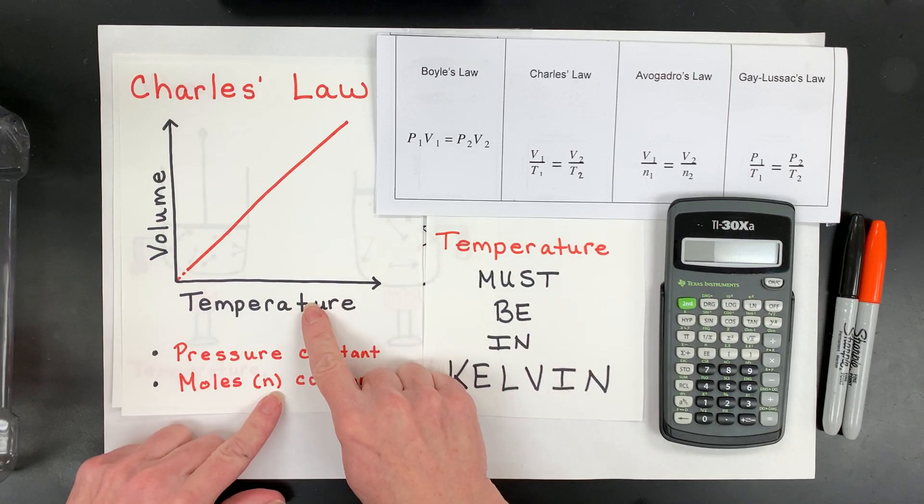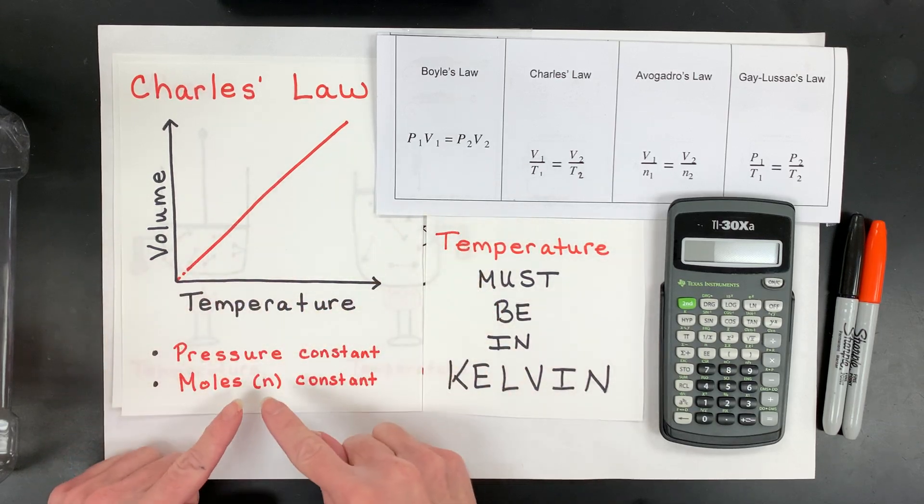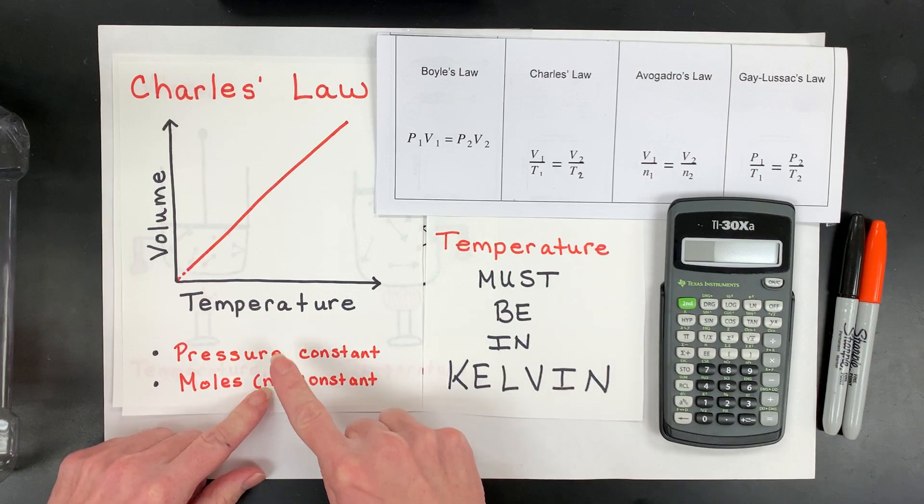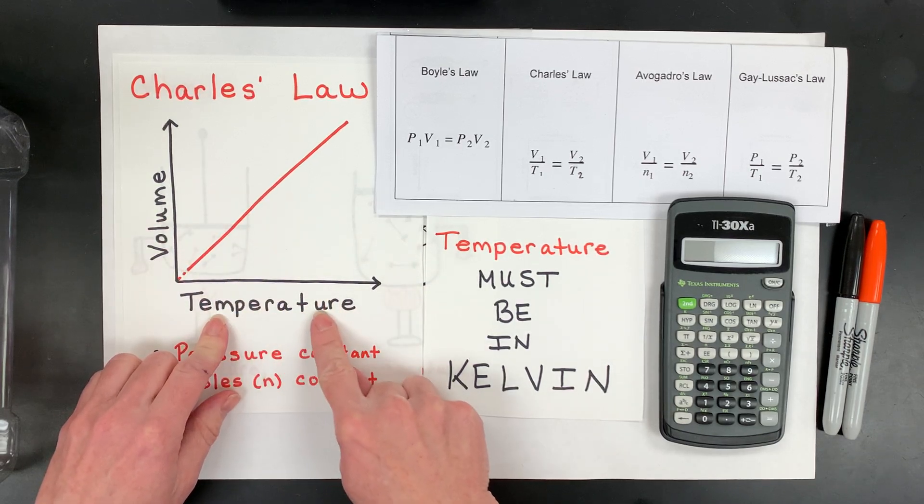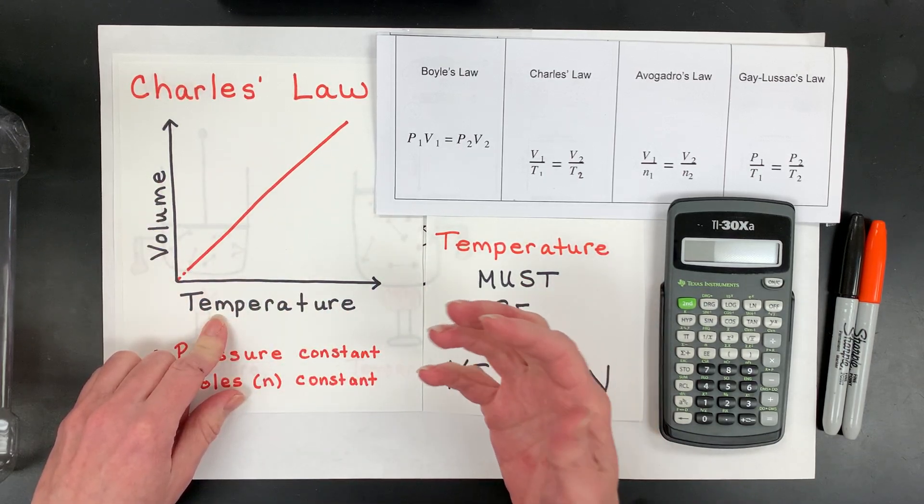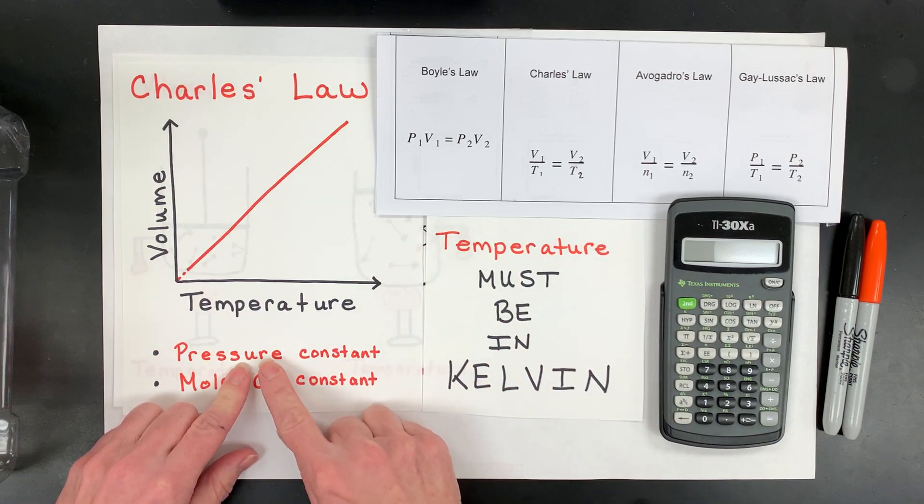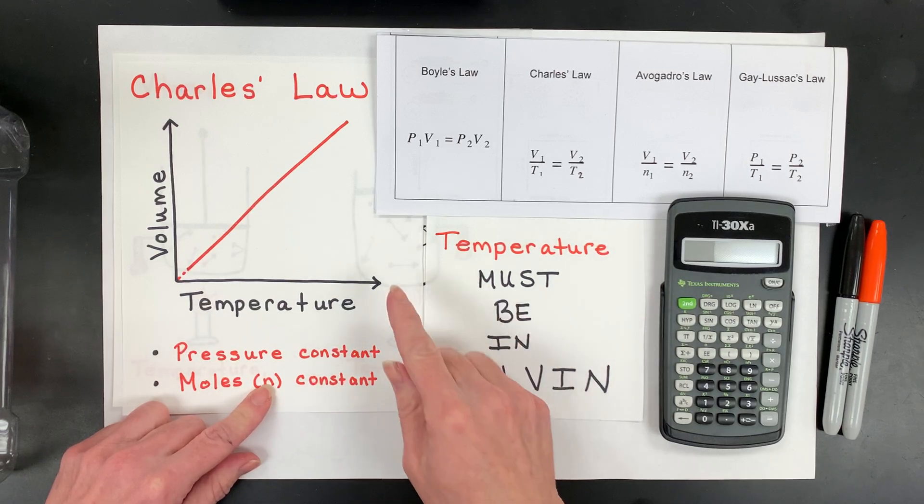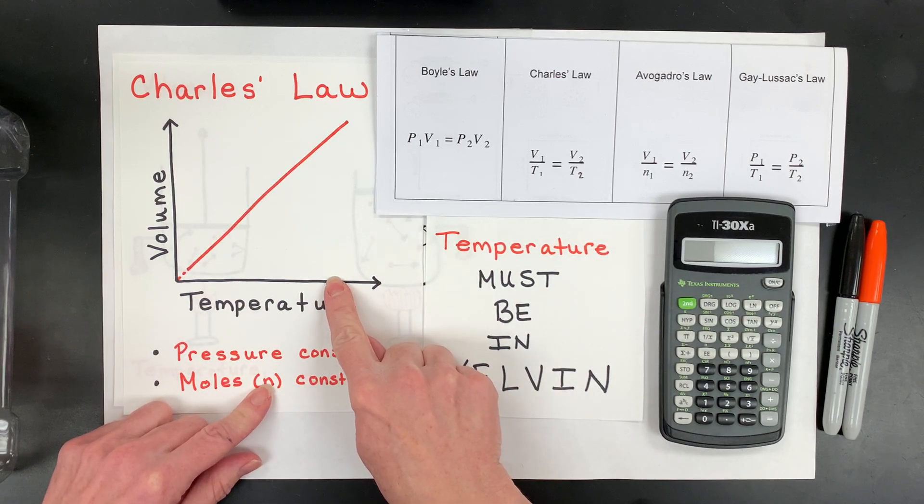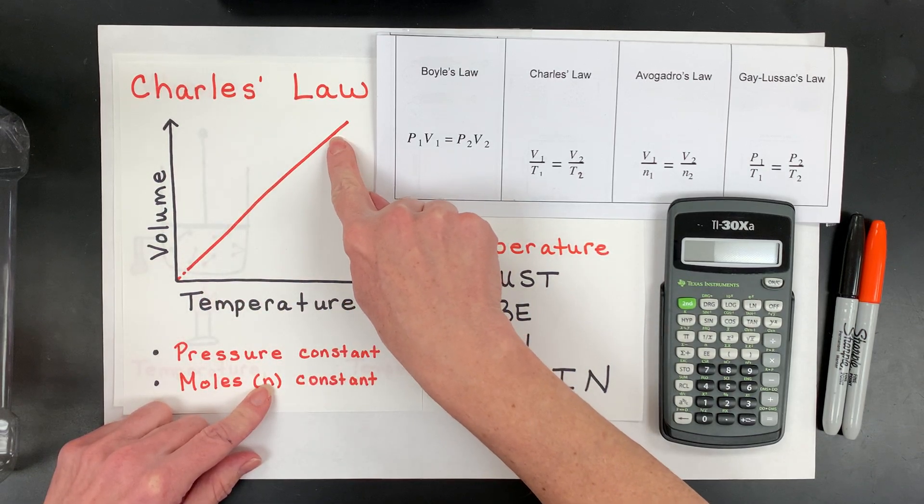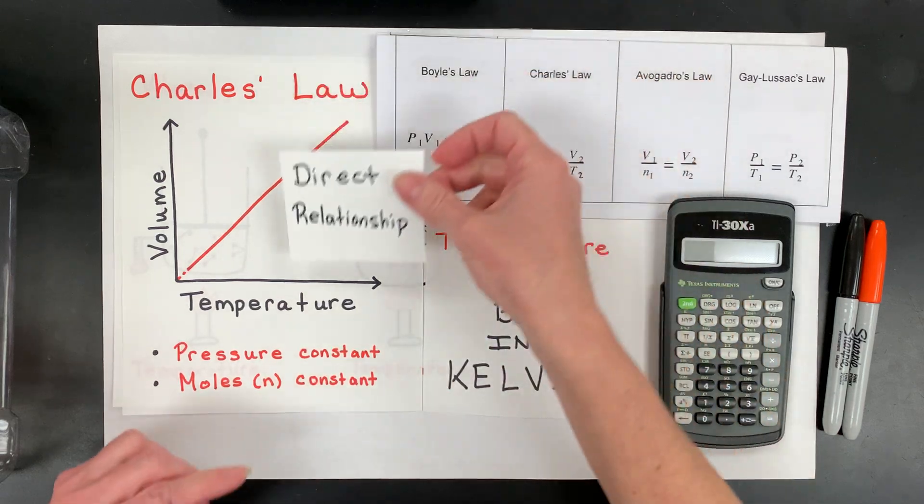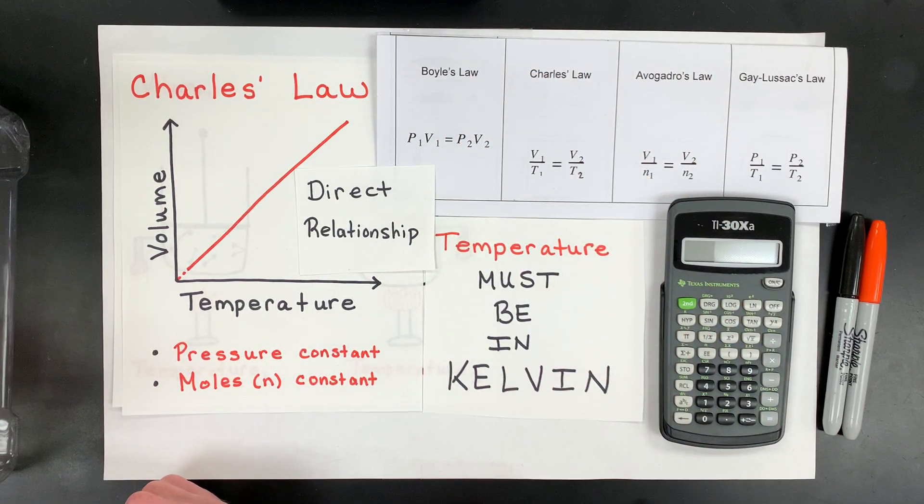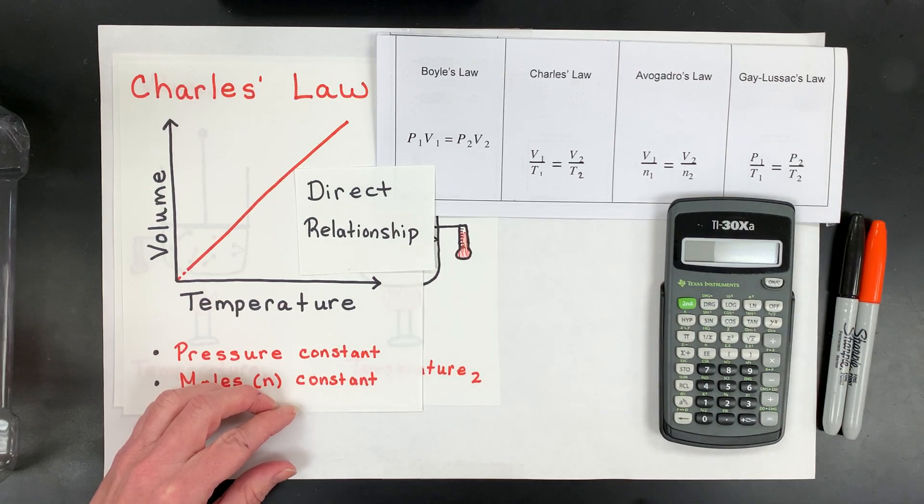What happens with Charles Law is that we have a gas sample, and to keep the pressure constant and we keep the moles constant, if we alter the temperature, the volume has to adjust to keep that pressure constant for that specific sample of moles of gas particles. For example, if the temperature goes up, the volume also has to go up. So they're directly related. This is a direct relationship and our temperature will have to be in Kelvins.